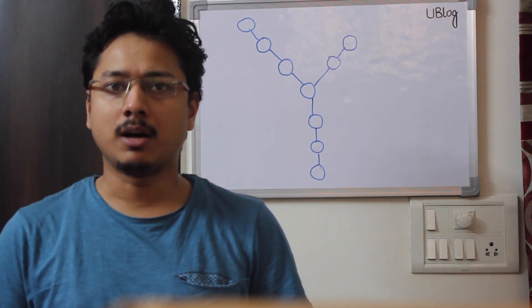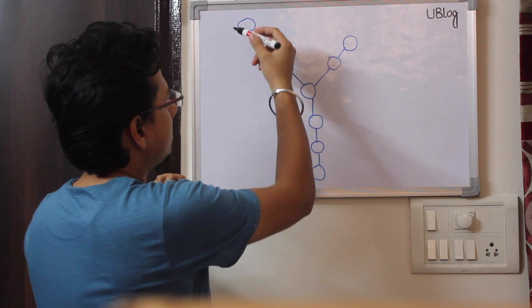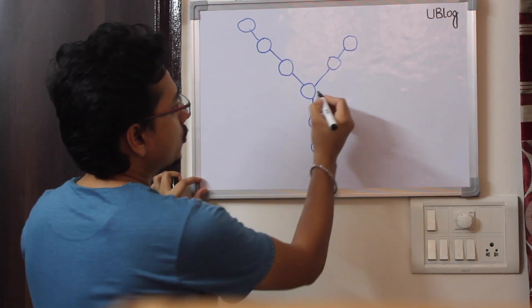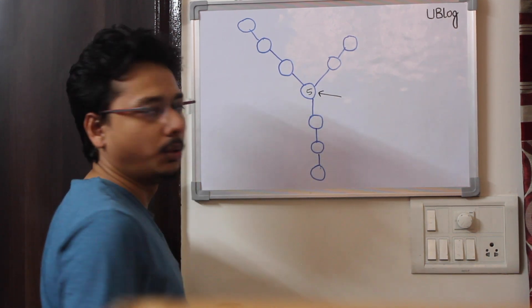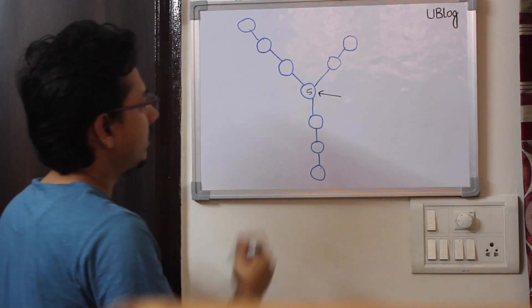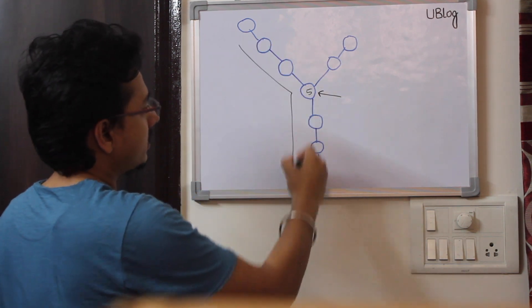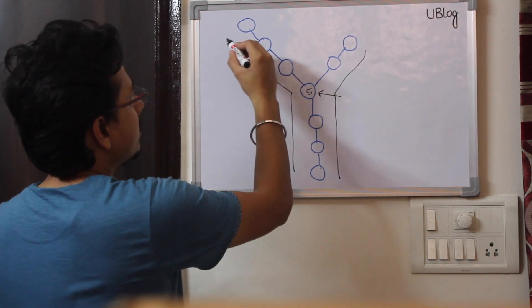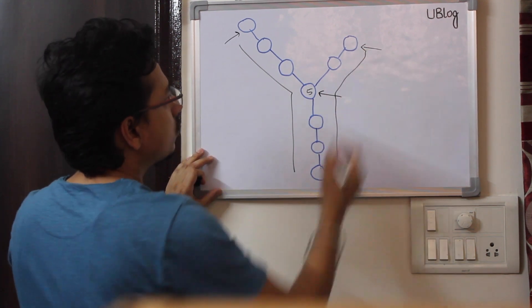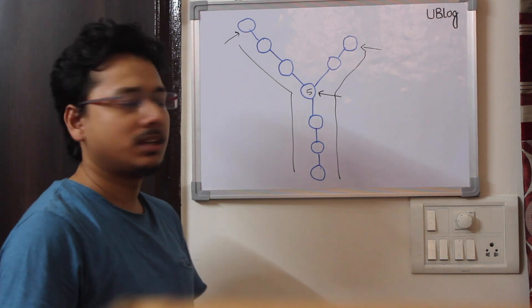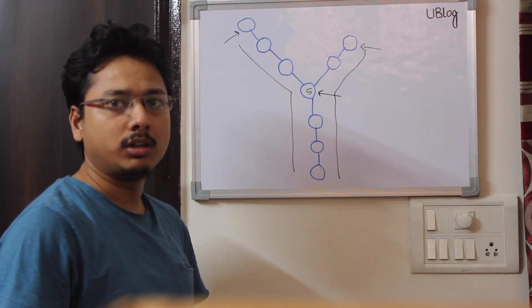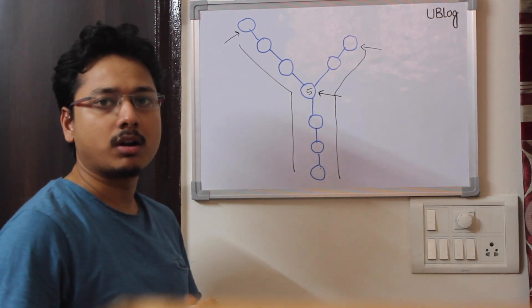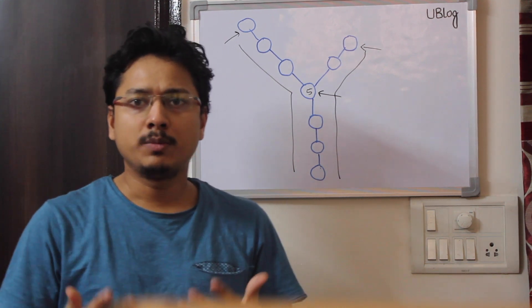I will explain the question and then approach it with multiple solutions. We are given a Y-shaped linked list and we need to find the intersection point. We can consider this Y-shaped linked list as two linked lists — one with a head here and another with a head here. So essentially, we are given two linked lists that merge at an intersection point, and after that all nodes are shared. We need to find that merge point and return the data.